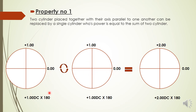These two have axes parallel to one another — 180 and 180. So whenever two cylinders are kept together in a trial frame with two plus 1 cylinders at 180 degrees, the resultant lens acting on the eye will be a plus 2 cylinder at 180. This is useful when you don't have a particular power in your trial set — for example, you can use a plus 1 and a plus 2 cylinder at 180 to replace a plus 3 cylinder.